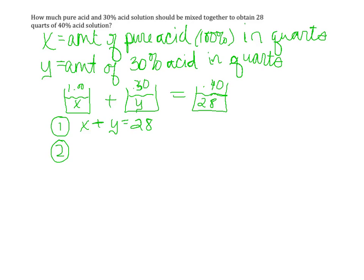Well, 100% of pure acid would be 1 times x, so I'm gonna write that simply as x. 30% of my y quarts would be 0.3y, and I want that to equal 40% of my 28 quarts to be acid.